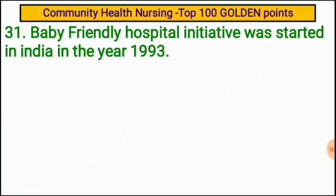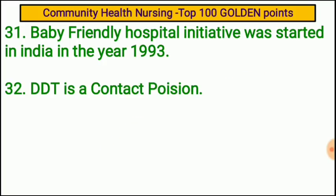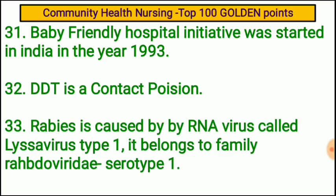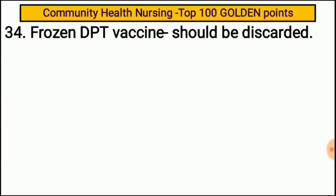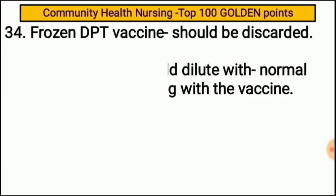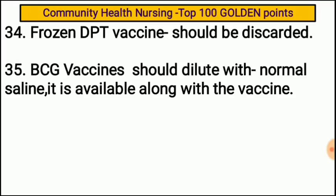Baby Friendly Hospital Initiative was started in India in the year 1993. DDT is a contact poison. Rabies is caused by an RNA virus called Lyssavirus type one, belonging to family Rhabdoviridae, serotype one. Frozen DPT vaccine should be discarded. BCG vaccine should be diluted with normal saline, which is available along with the vaccine.